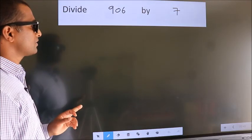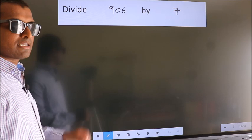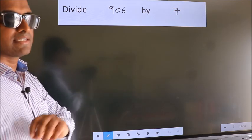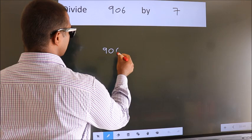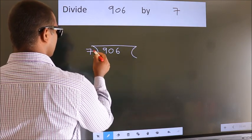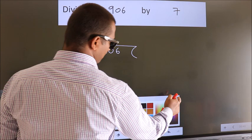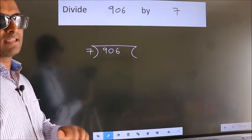Divide 906 by 7. To do this division, we should frame it in this way. 906 here, 7 here. This is your step 1. Next.